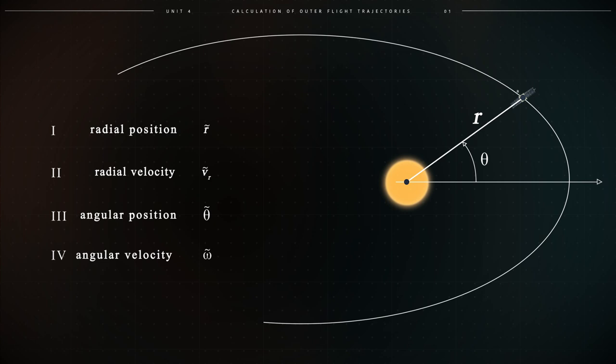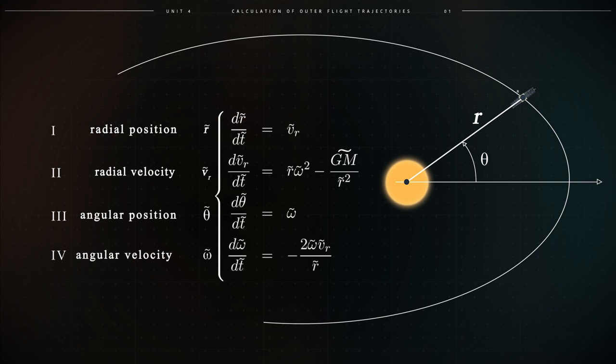Based on these four variables, the four non-dimensional equations to calculate the motion of this spacecraft around the Sun are the following ones. dr tilde dt equals vr tilde. d vr tilde dt tilde equals r tilde times omega tilde squared minus gm tilde over r tilde squared. d theta tilde dt equals omega tilde and d omega tilde dt tilde equals negative two times vr tilde omega tilde over r tilde.